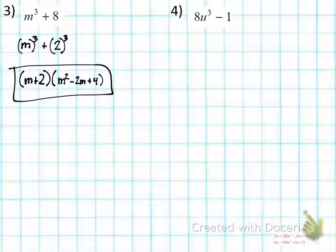Okay. Next one. 8U³ minus 1. What's a equal to here? 2U, right? And that's if we were to write this, that's to the third power. And then 1, or minus 1 is going to be minus 1 to the third power. Finish up my problem. Go. Factor it out.